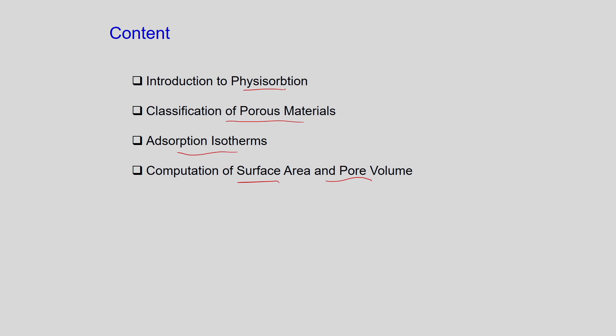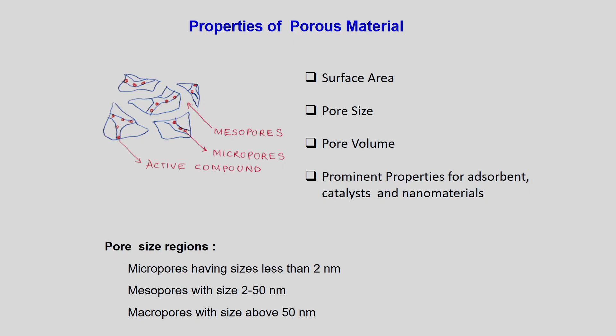Porous materials and adsorption isotherms — you must be familiar with adsorption isotherms from your B.Tech or Master's curriculum. A gas is adsorbed on a surface or solid, and we write it in terms of equilibrium. The isotherm means temperature is constant while we vary the pressure. The properties of porous materials usually depend on the surface area, pore size, and pore volume — the prominent properties of adsorbents, catalysts, and nanoparticles.